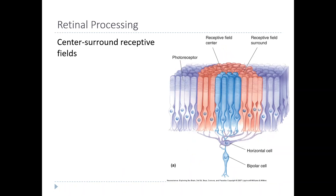Now let's talk about retinal processing. It turns out that the retina is a little bit unique among the other sensory systems in that there is quite a bit of processing that goes on in the retina before it ever gets to the brain.